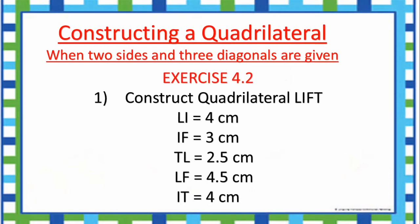First question: Construct quadrilateral LIFT. LI is equal to 4 cm, IF is equal to 3 cm, TL is equal to 2.5 cm, LF is equal to 4.5 cm, IT is equal to 4 cm. Three diagonals and two sides are given. Now we can see how to construct quadrilateral LIFT.